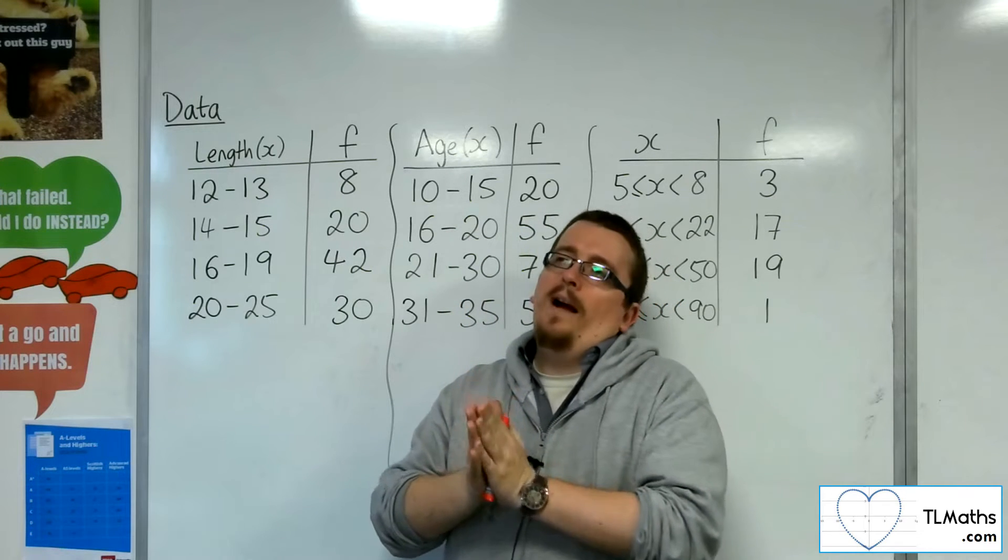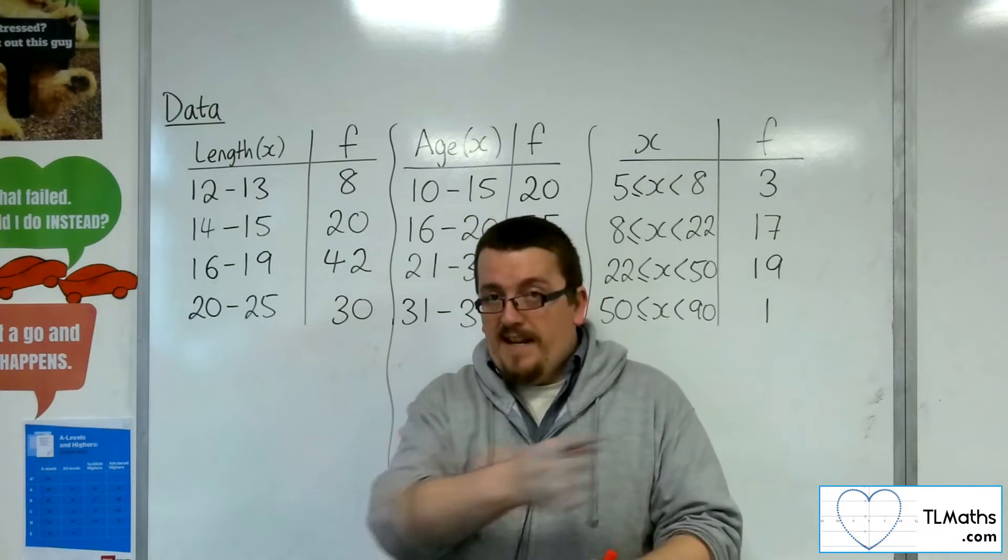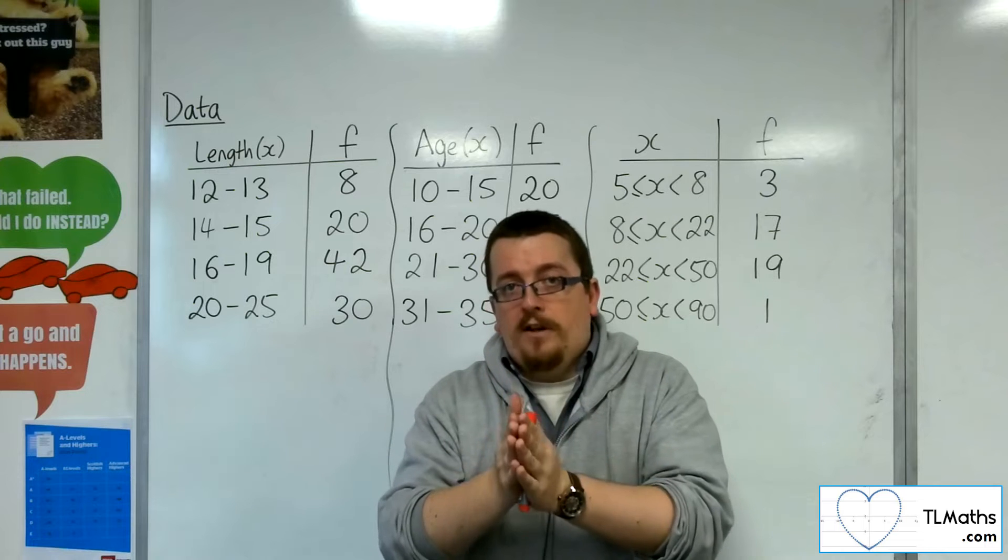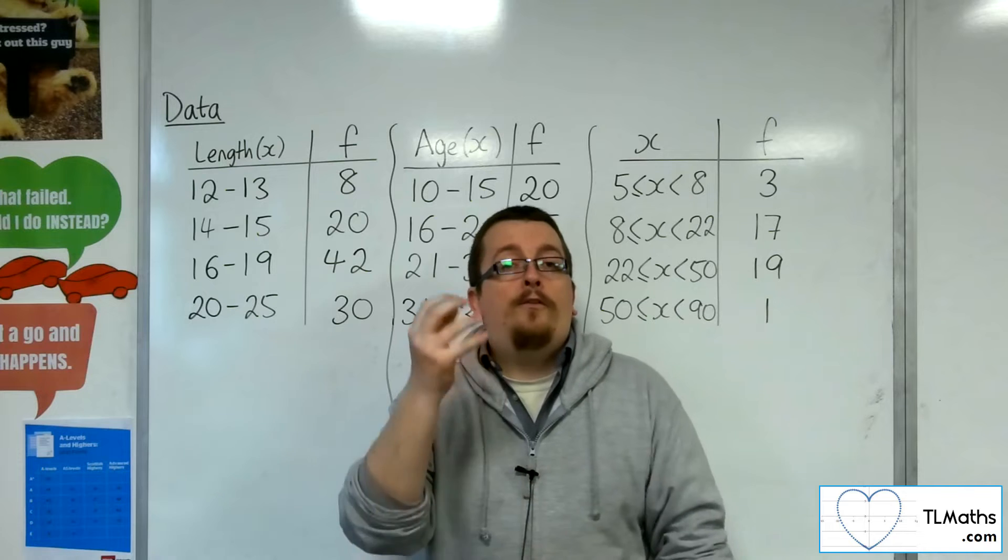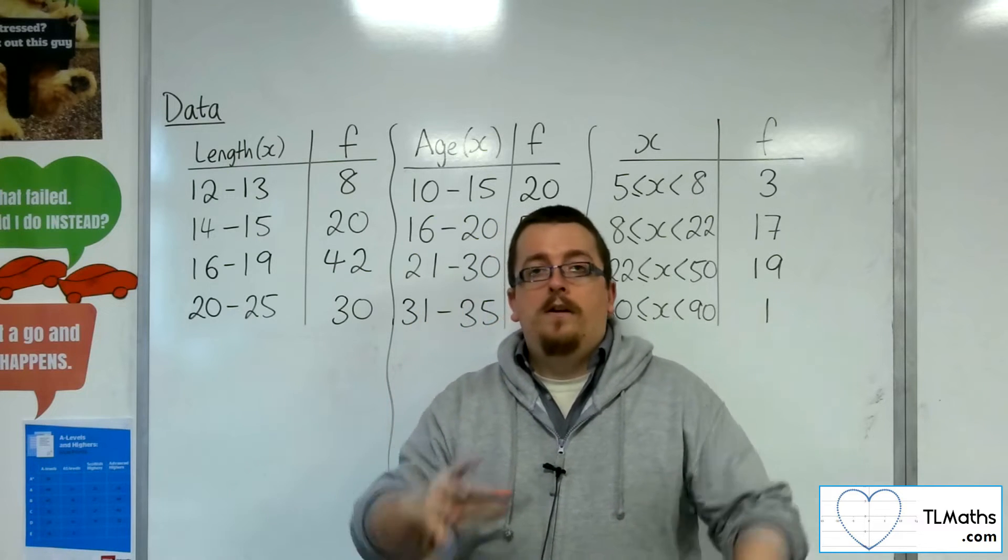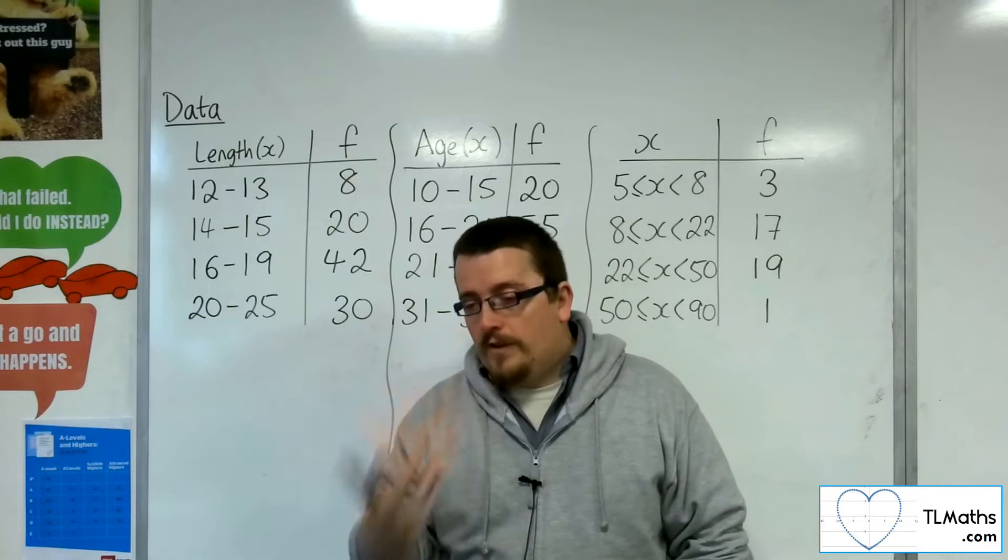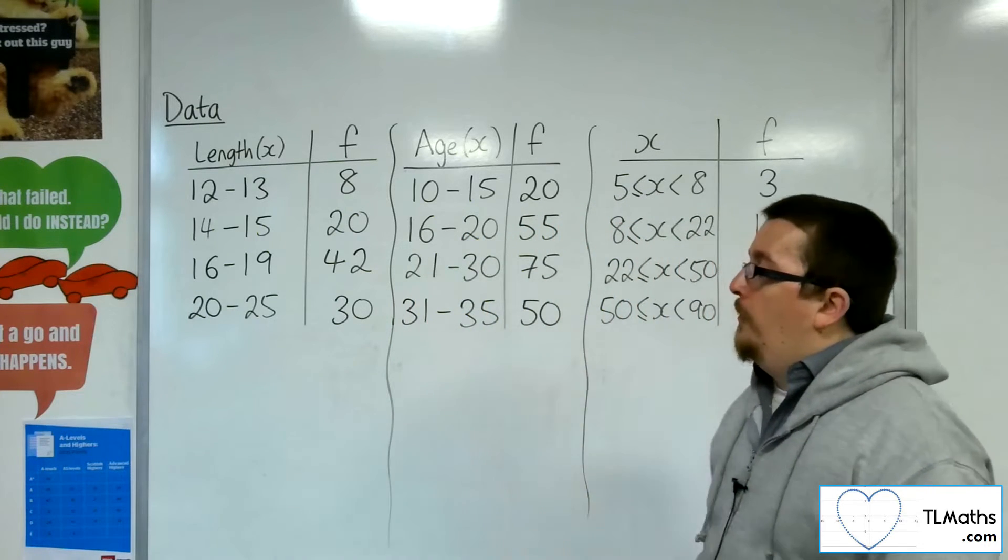So when you had 10 bits of data, 10 data points, then you know that the middle of the data is between the 5th and the 6th value, so the 5.5th value. And that's found by adding 1 to the number of bits of data that you have and dividing by 2. So 10 plus 1 is 11, divided by 2 is 5.5.